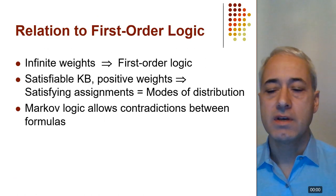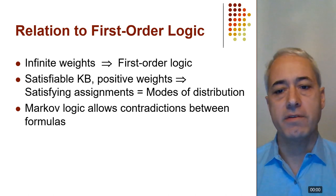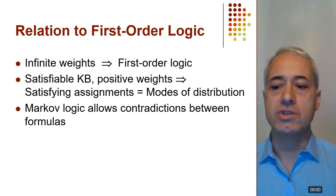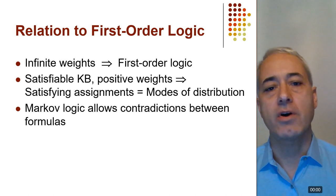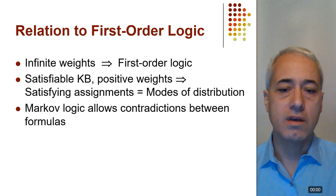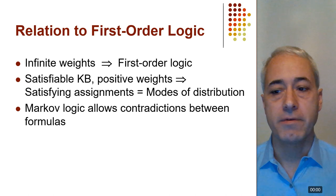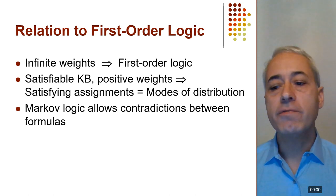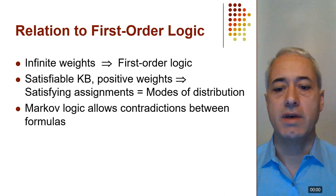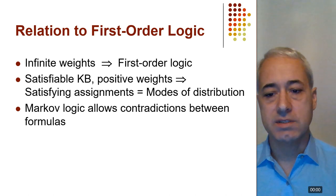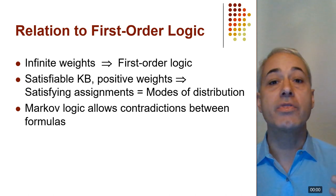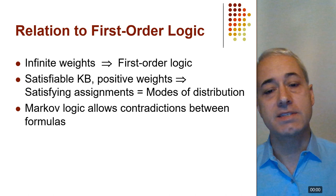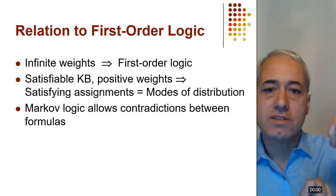How does MLN relate to first-order logic and probabilistic models? First-order logic is the limit of Markov logic when the weights go to infinity — constraints become hard, and violating even one instance of a formula makes the world impossible. Even with finite weights, if you have a satisfiable knowledge base with all positive weights, the satisfying assignments are the modes of the distribution — the states where probability is highest — and as we move away from them, probability decreases gradually.